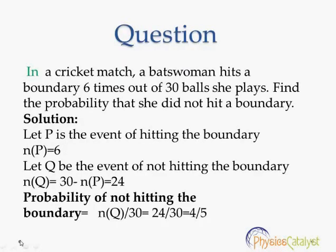The next question. In a cricket match, a batswoman hits a boundary 6 times out of 30 balls she plays. Find the probability that she did not hit a boundary. Let P be the event of hitting the boundary. So number of trials where the boundary is hit is equal to 6.